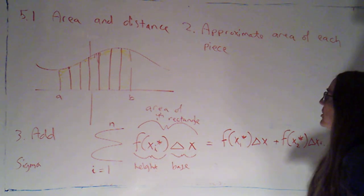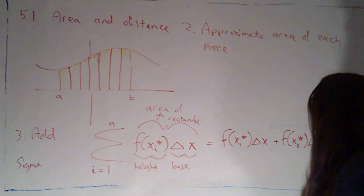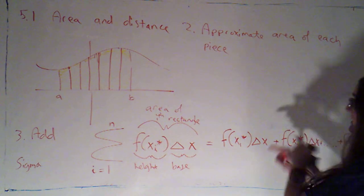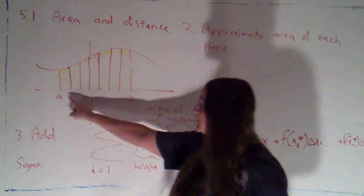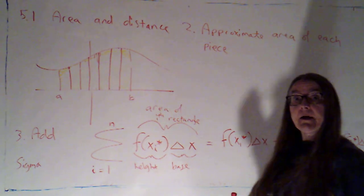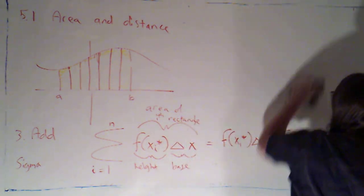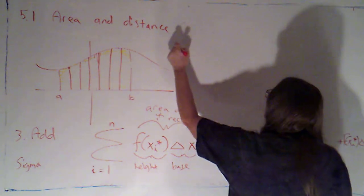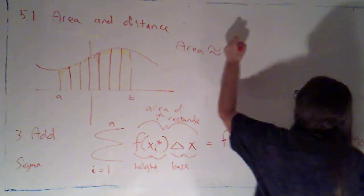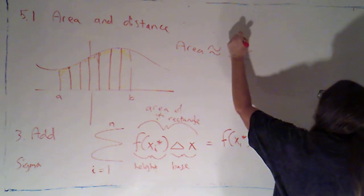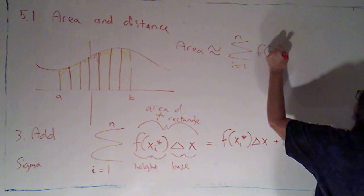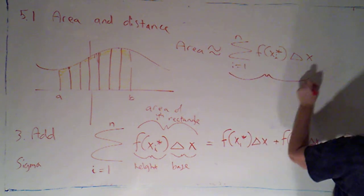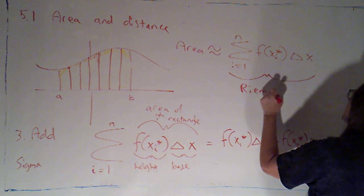Okay. So, what we have now is a very nice approximation of the entire area. We approximated each piece. When we added them all up, we get an approximation of the area. So, with steps one through three, chop, approximate, add, we have that the area is approximately the sum, as i goes from 1 to n, of f of xi star times delta x. This sum actually has a name. We call it a Riemann sum.